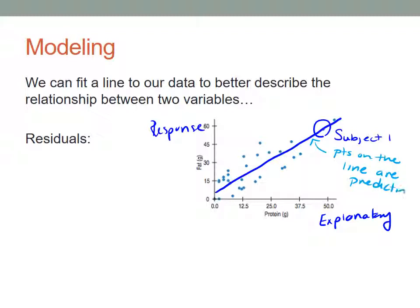So what a residual is, is the difference between a data point and a predicted point for a specific x value. For example, if I want to figure out what the residual is for this point right here, I'm going to look at the x coordinate and draw a vertical line to the predicted value. The length of this distance is called the residual.